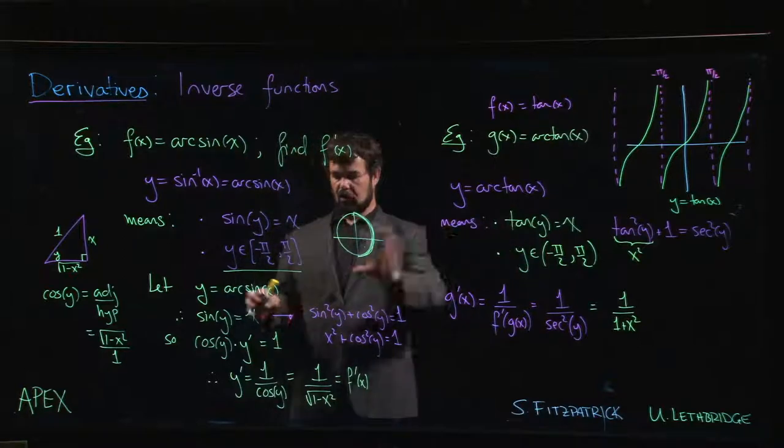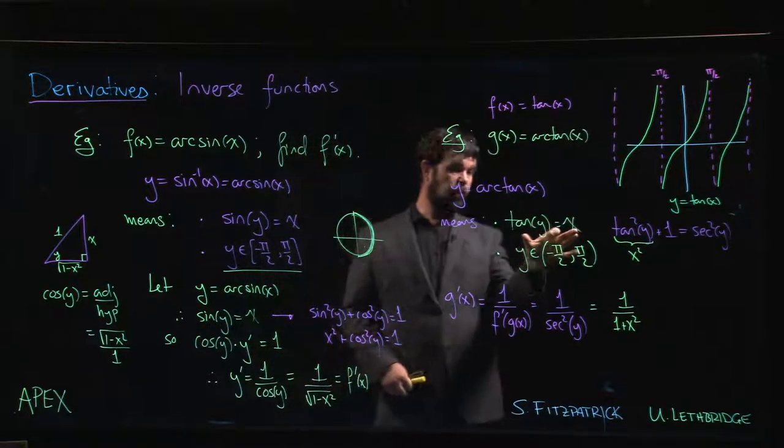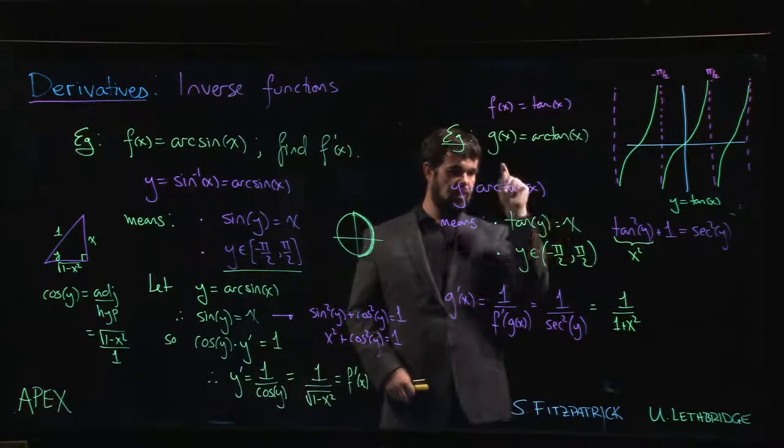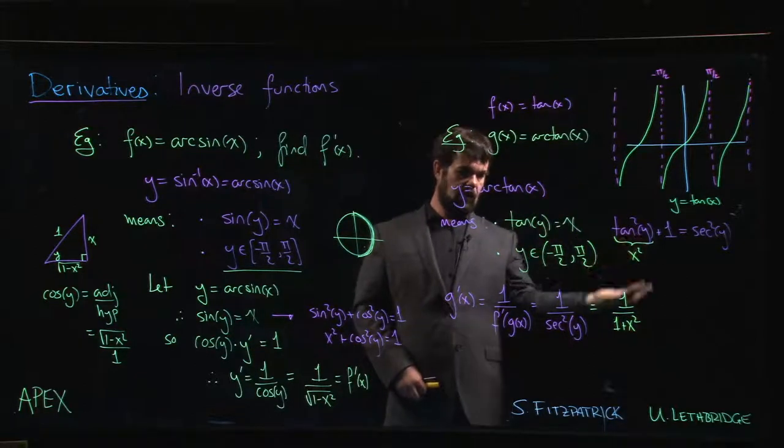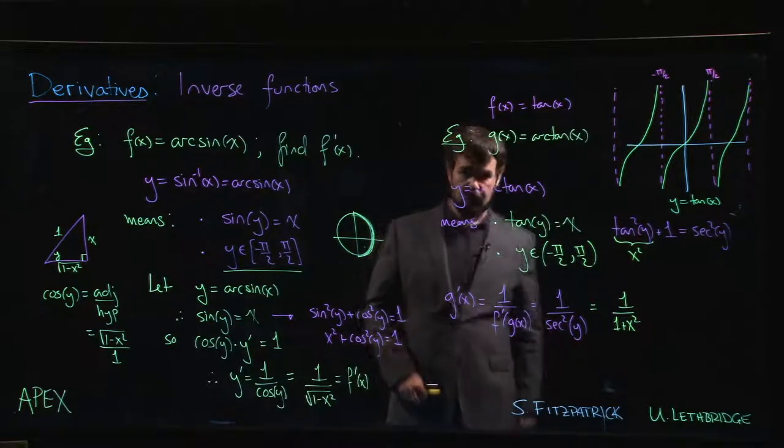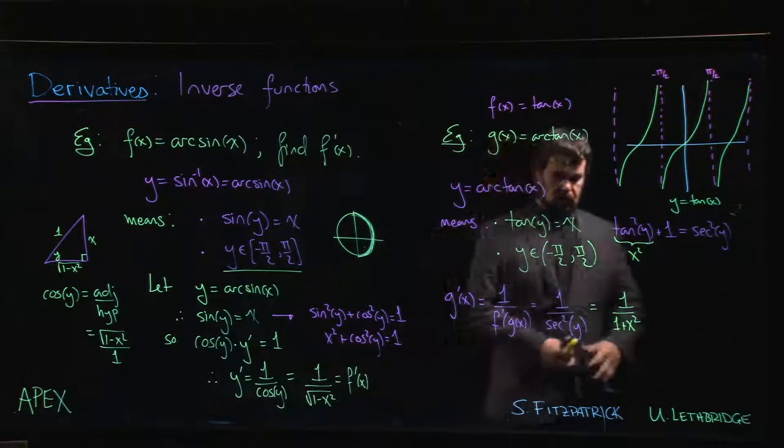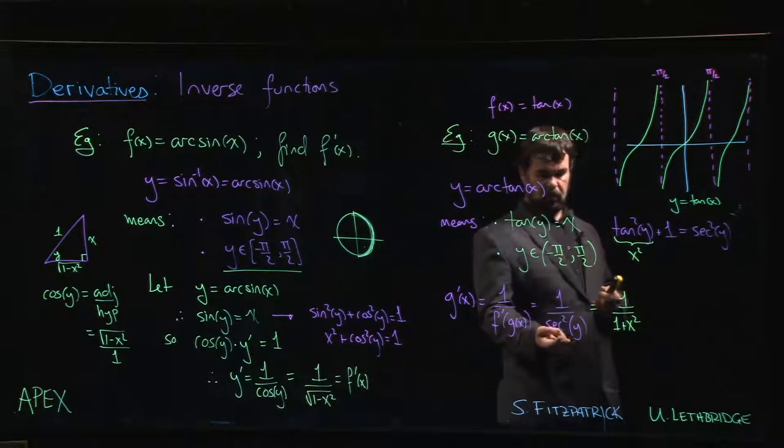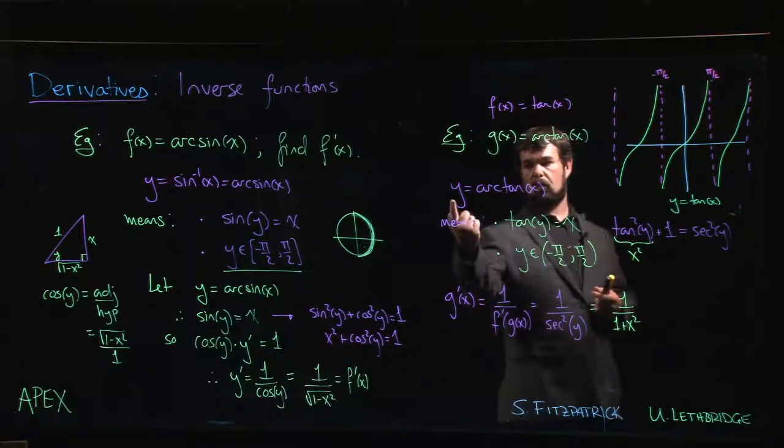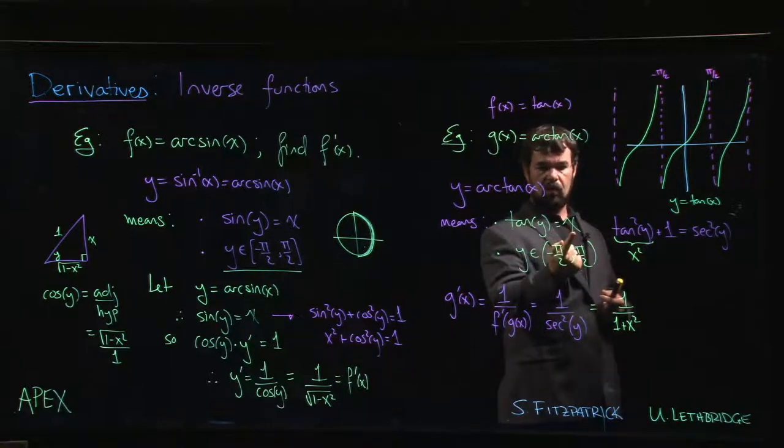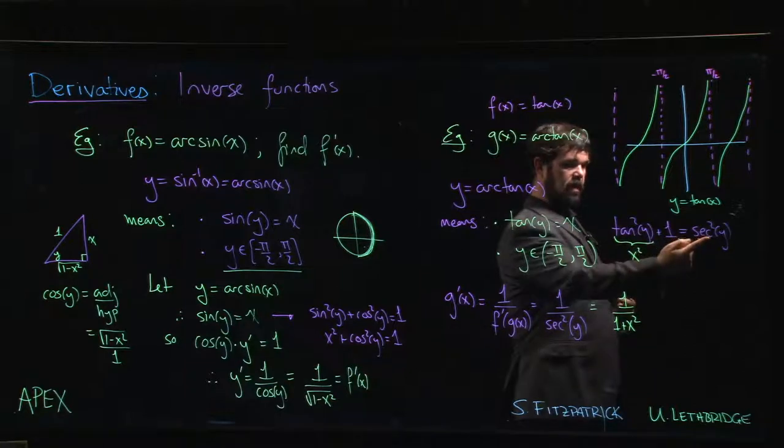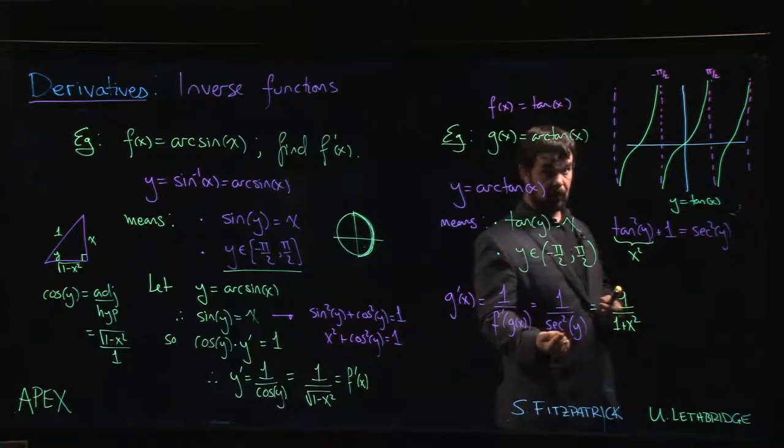If you want, you can take the approach we used last time. Take the derivative of both sides here using implicit differentiation. Secant squared y times y prime will equal 1. Divide by secant squared, you get down to here. The hard part is figuring out, well, what do I do with secant squared y? So that's where you remember, okay, so let's see, what was y? Y was arctan, so tan of y equals x, tan squared plus 1 is secant squared. So now I know what to do with my secant squared.